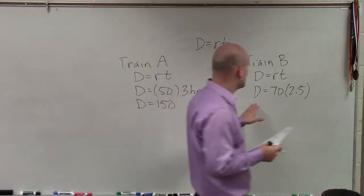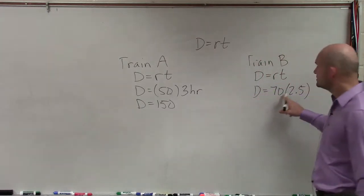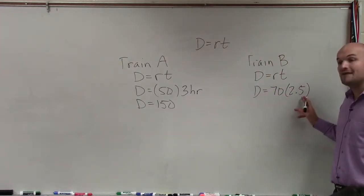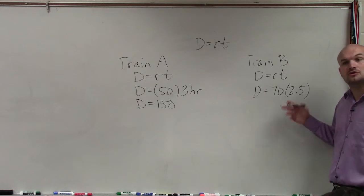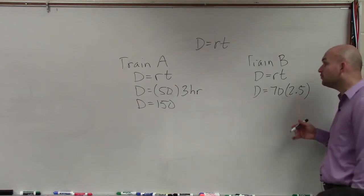And the difference for train B is going to be 70 times 2 is 140. Half of 70 would be 35, so 35 plus 140 would be 175.